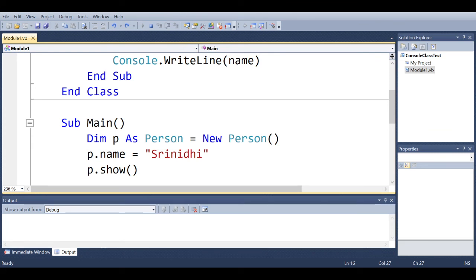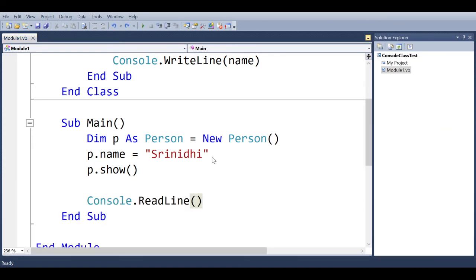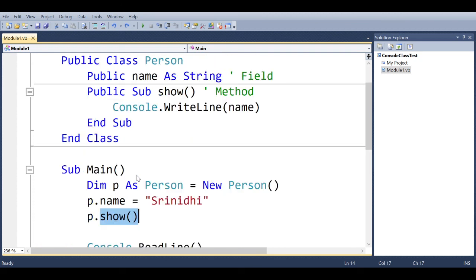This is going to display output Sriniti. This output is because we have assigned Sriniti as a value for our field name, and this was the object instantiated, and we have displayed that field in the show procedure.